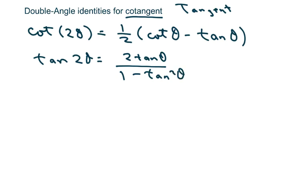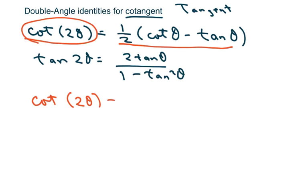So I'm going to rewrite this and I want this left side to look like my right side. So first thing I'm going to write is cotan of 2 theta equals 1 over tan of 2 theta with reciprocal identities.